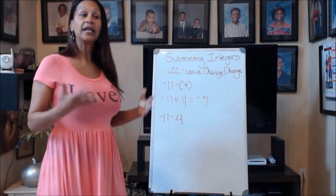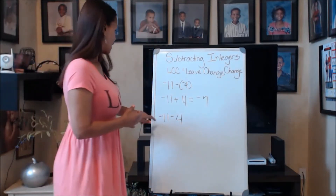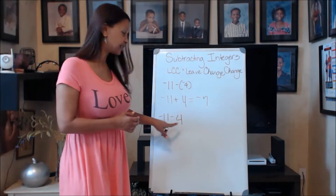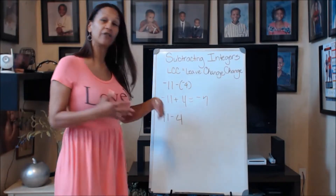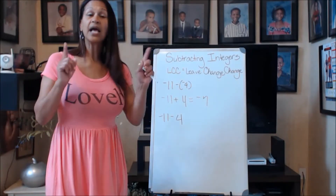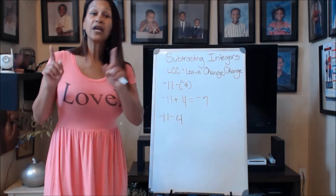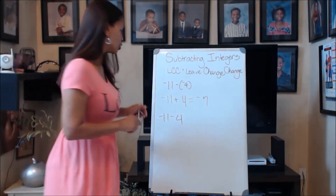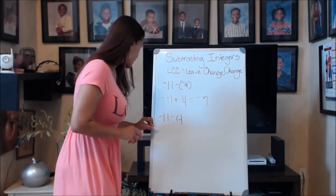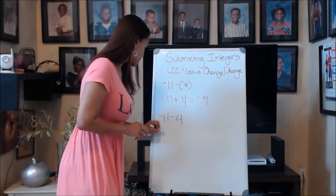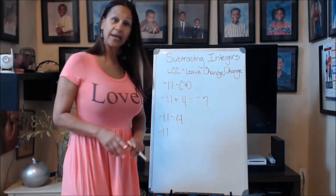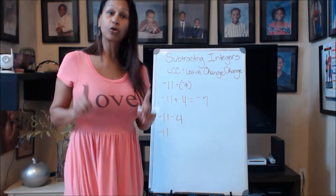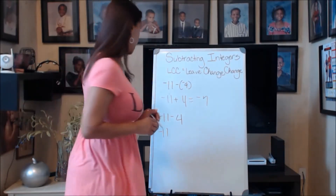Now let's look at it another way. Negative 11 minus positive 4. Once again, leave, change, change — LCC. So you leave the negative 11 the same. You change the operation from subtraction to addition,